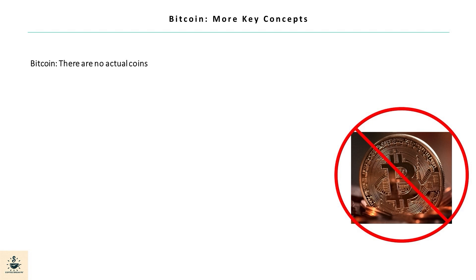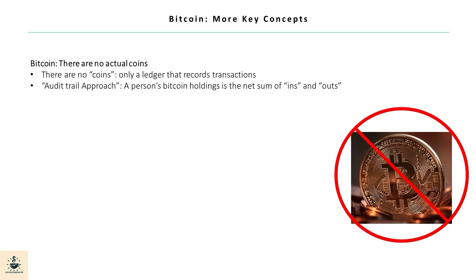Although Bitcoin is often depicted as a metal coin, this representation does not accurately reflect the protocol. In reality, there are no virtual or physical coins — no block of code is being transferred between two different wallets. Instead, the balance of a person's Bitcoin is the net sum of the transactions in and out of their wallet. For example, if Alice receives 10 Bitcoins and spends 4, Alice's balance is 6 Bitcoins. The amount of Bitcoin a person owns is calculated by taking into account all transactions to arrive at their net balance.